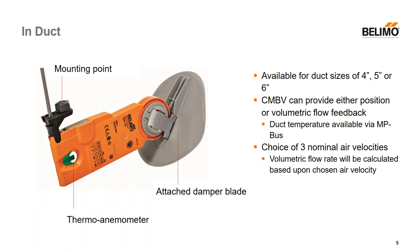When commissioning these actuators, you have a choice of three nominal air velocities from a drop-down menu, and your volumetric flow rate will be calculated based upon the velocity and the duct size — just a basic calculation.